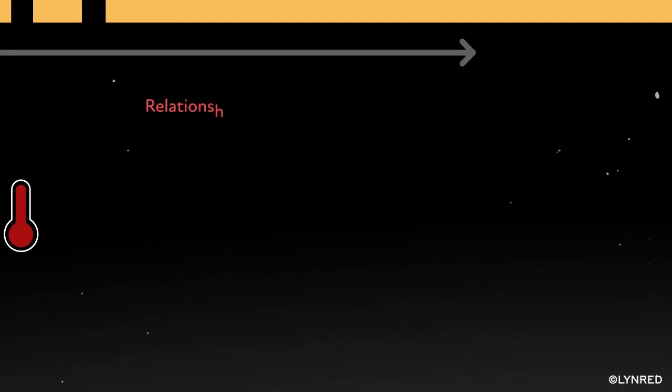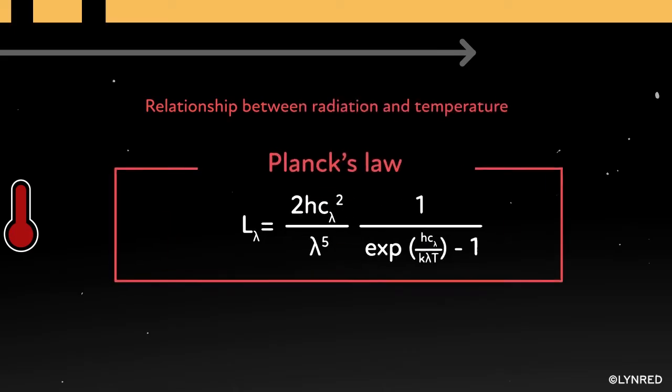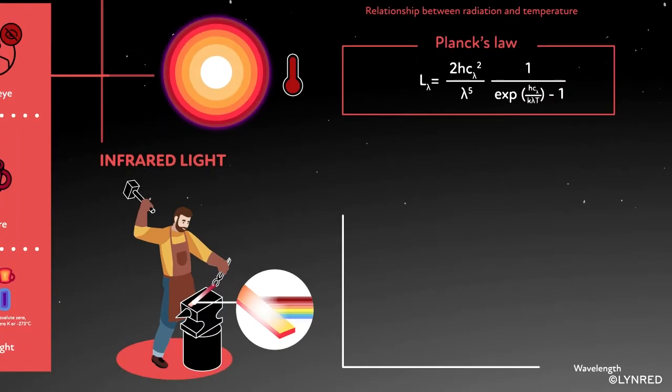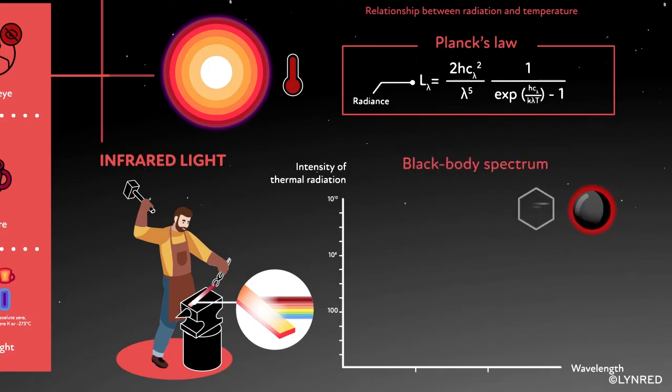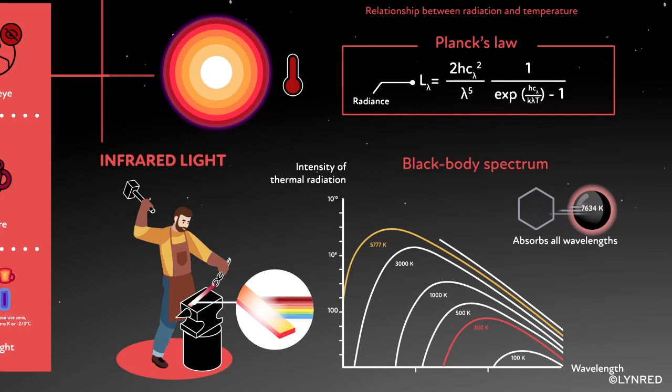This relationship between radiation and temperature is described by Planck's law, which is used to calculate the intensity of thermal radiation, or radiance. This law applies to black bodies, theoretical bodies that absorb all wavelengths and emit a flux depending on their temperature for a given spectral band.